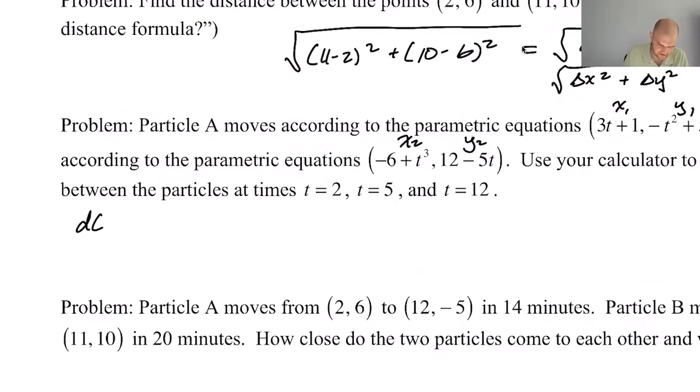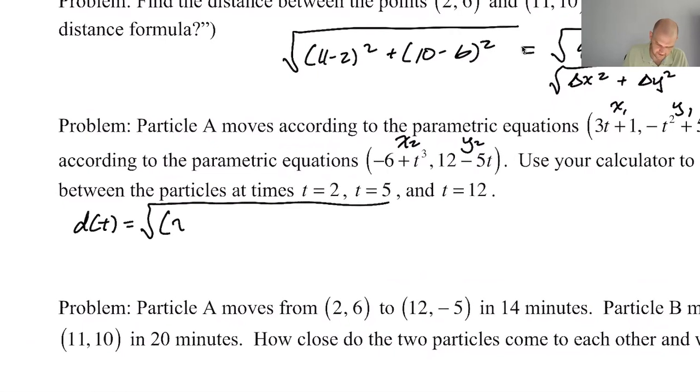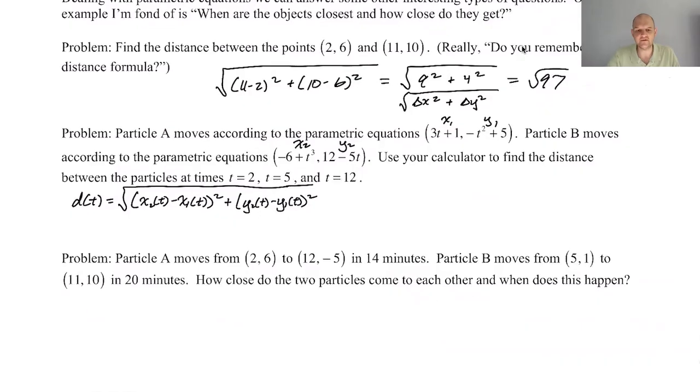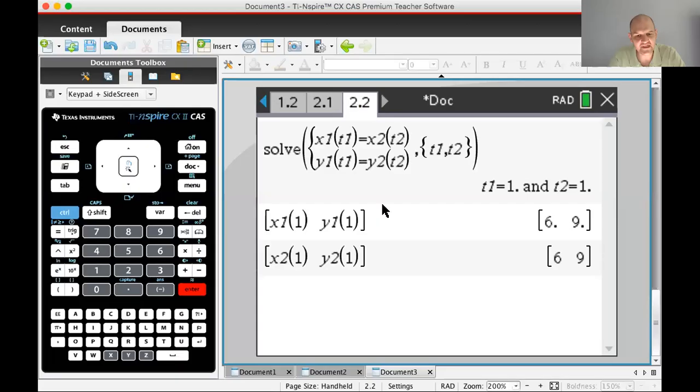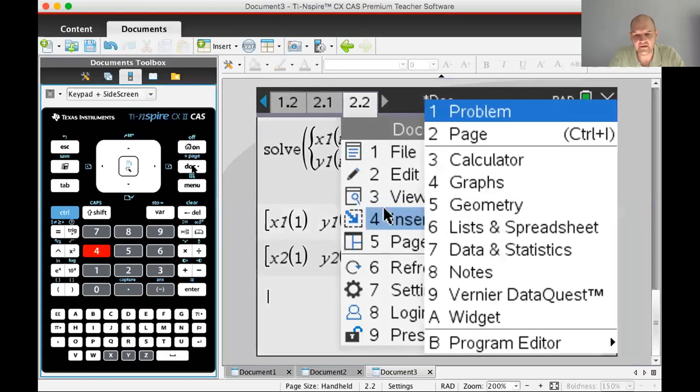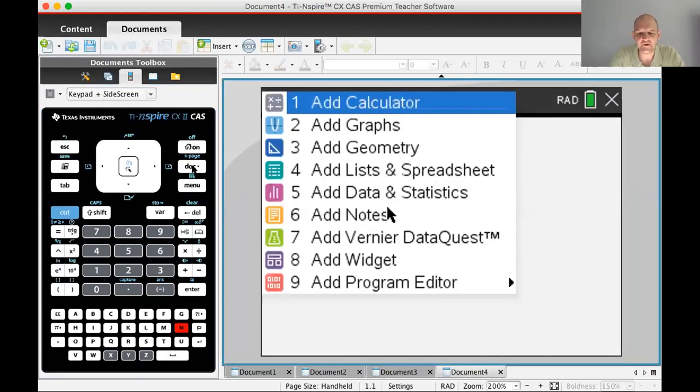Let's say that the distance as a function of t is the square root of [x₂(t) - x₁(t)]² plus [y₂(t) - y₁(t)]². That's the distance formula. Let's go to the calculator and do this. I'll start a new document.